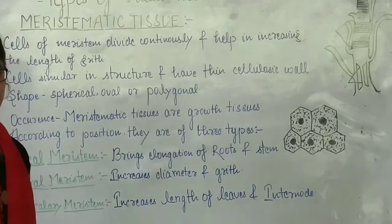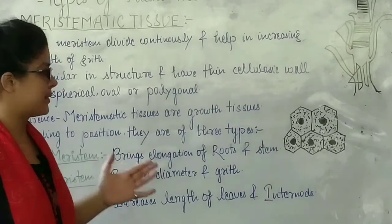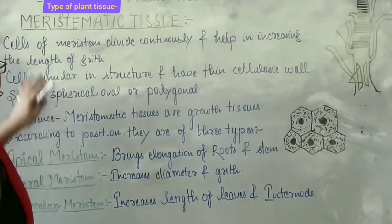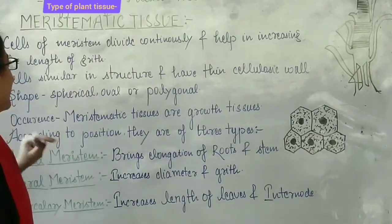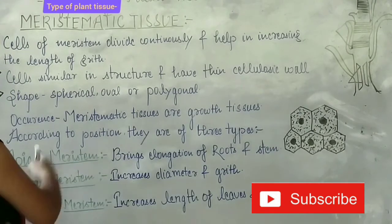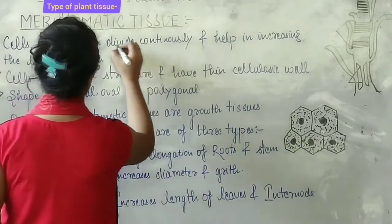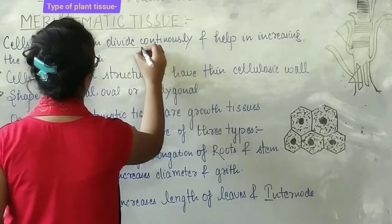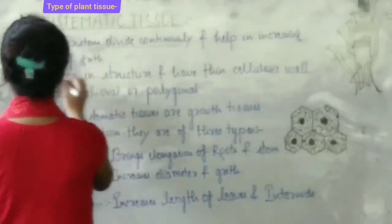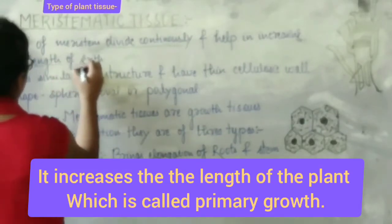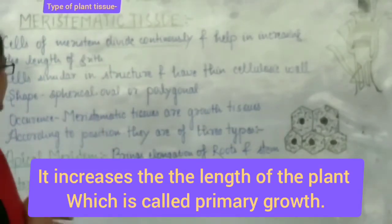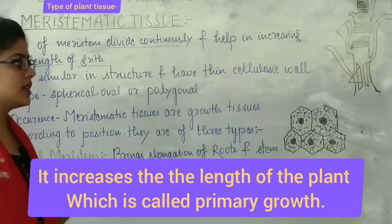Let's note the types of plant tissue: meristematic and permanent. First, meristematic tissue. The cells of meristematic tissue divide continuously. This tissue continuously divides and helps in increasing the length of the plant. The main function of meristematic tissue is to drive plant growth.